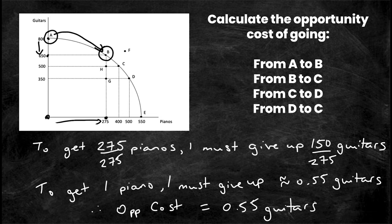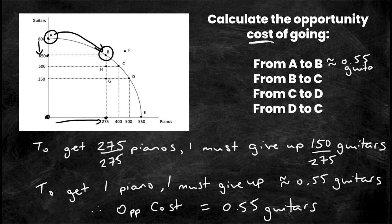Now you might ask: how do I know if the answer is in terms of guitars or pianos? Opportunity cost is a cost — it will always be in terms of what you give up. Here, I'm giving up guitars as I go from point A to point B, so the opportunity cost is expressed in guitars: approximately 0.55 guitars.